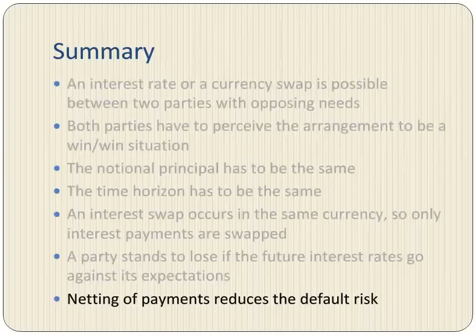Let's summarize what we have learned in this tutorial. An interest rate swap is possible between two parties with opposite needs, where one wants to swap fixed rate cash flows for floating rate and the other wants to do the opposite. Both parties have to perceive the arrangement to be a win-win situation for the deal to take place. The notional principal is the same — in this example, it is $1 million. The time horizon for both loans is the same; in our example, it's five years. An interest rate swap occurs in the same currency, so only interest payments are swapped; the principal amounts offset each other and are netted out to zero. A party stands to incur a loss if future interest rates go against its expectations. Netting of payments reduces the default risk to the other party.